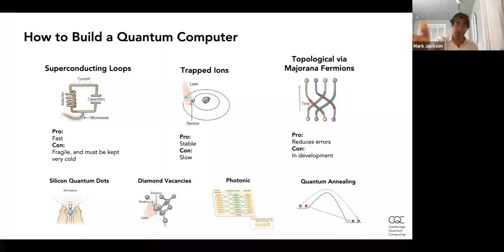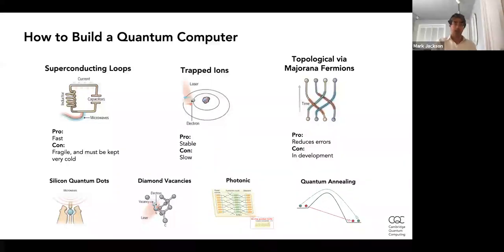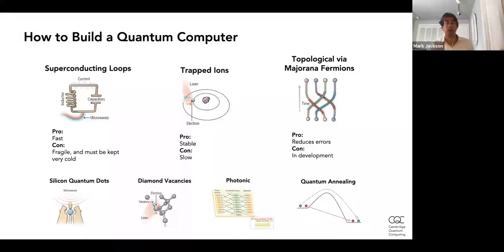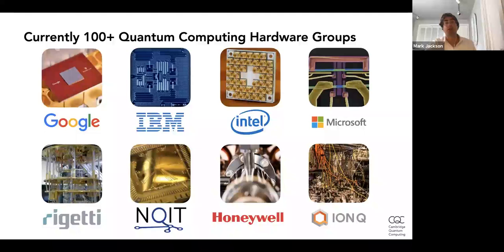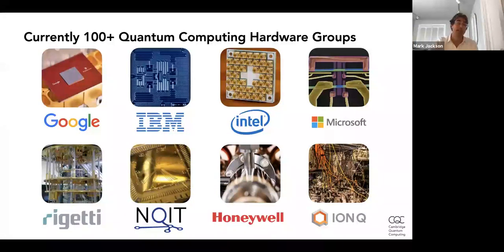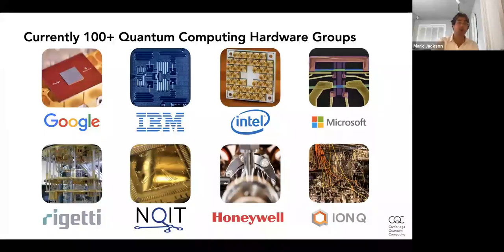A final approach worth mentioning is photonic, which uses particles of light — photons — to do quantum computation. At least two startups are trying to commercially develop this: Xanadu Quantum Computing in Toronto and PsiQuantum in Palo Alto. Among the groups mentioned: Google and IBM use superconducting, as does half of Intel here in Portland. Microsoft is using the topological approach. Honeywell and IonQ both use ion trap technology. We know of over a hundred quantum computing groups just in the western hemisphere alone, and all the pictures shown are actual quantum computers, not artist illustrations.